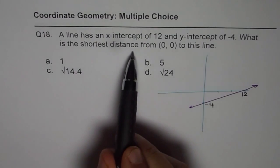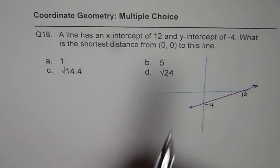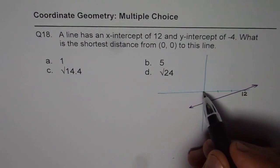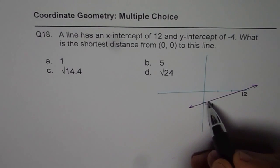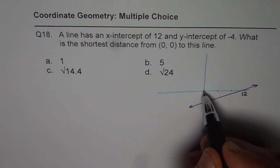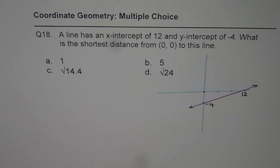What is the shortest distance from 0,0 to this line? Now 0 is right there. So we have to find the shortest distance from the origin to this line. How are you going to find it?